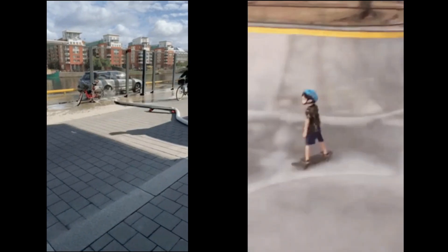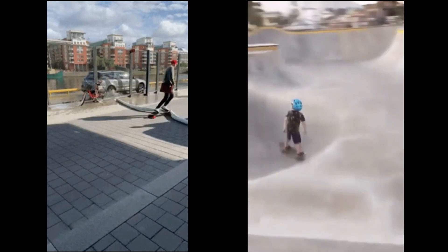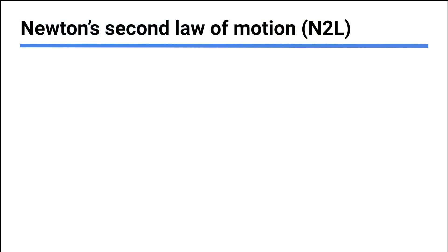Here are some fun examples of Newton's First Law in action: skateboard stops, person does not. These are examples where a force acts on the skateboard but maybe not on the person, and they go flying - because they're moving, they're going to keep moving until a force acts to stop them.